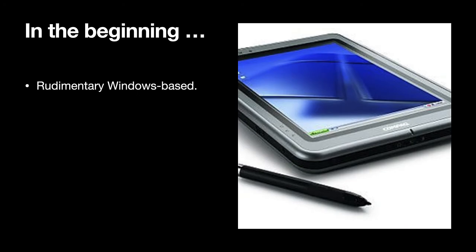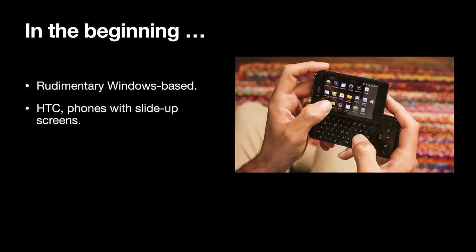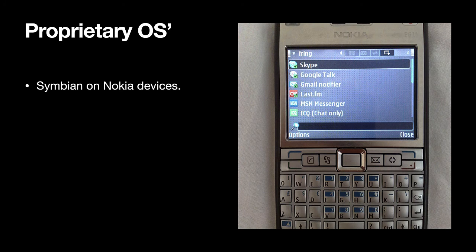Between 2000 and 2005, cell phones started sprouting browsers. And in 2001, Compaq introduced a rudimentary Windows-based tablet, and phones started sprouting keyboards. Naturally, a lot of web designers started seeing their sites pop up on these devices. It wasn't pretty — it was cool, but it wasn't pretty. Websites either fell apart or were simply resized down to fit the screens. There were also a number of proprietary operating systems such as Symbian, which showed up on Nokia devices and got picked up by a ton of other device manufacturers.